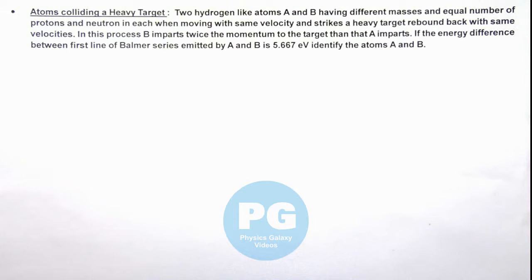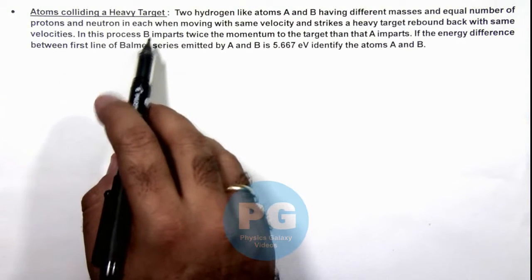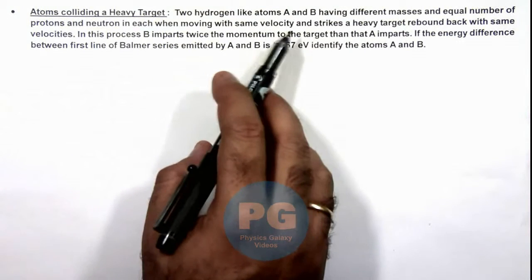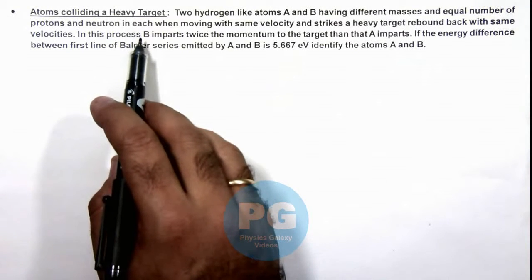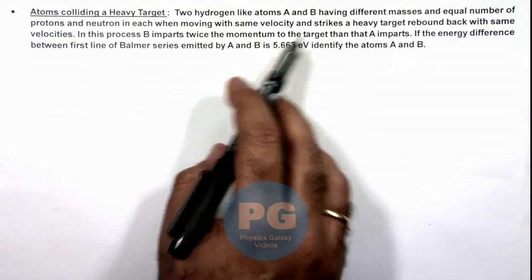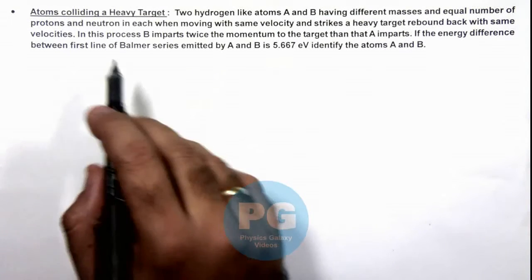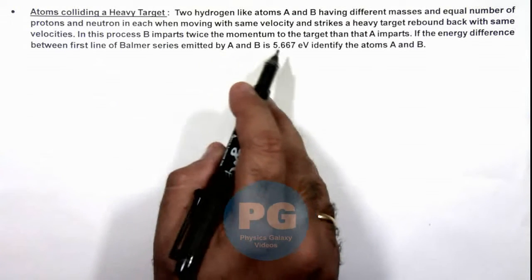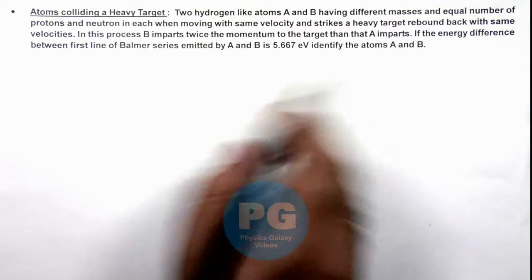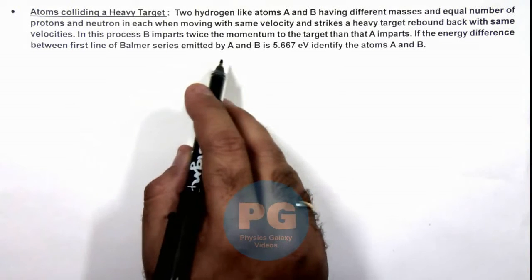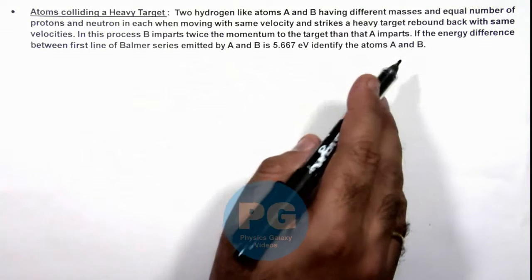This illustration is analyzing a situation when atoms collide a heavy target. We are given that two hydrogen-like atoms A and B having different masses and equal number of protons and neutrons in each, when moving with same velocity and strikes a heavy target, rebound back with same velocities. In this process B imparts twice the momentum to the target than that A imparts. If the energy difference between first line of Balmer series emitted by A and B is 5.667 electron volt, we are required to identify the atoms A and B.